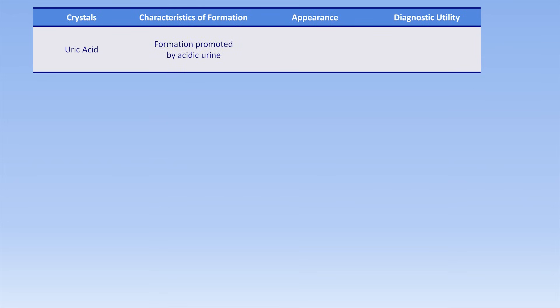First, uric acid crystals. These form in acidic urine and have a slightly pleomorphic appearance under the microscope, meaning they can have a variety of shapes, though they are most often slightly elongated with rounded edges that can mimic the shape of an American football. While uric acid crystals are best known as the cause of gout when they form in joints, when they form in the urine they are most associated with tumor lysis syndrome, in which there is a massive sudden death of cancer cells due to the first round of chemotherapy, and all of that DNA is rapidly broken down with uric acid as the end product.